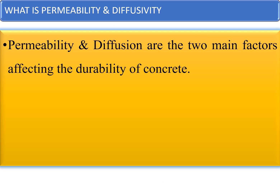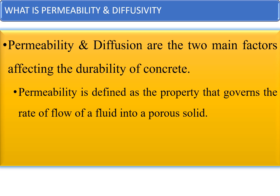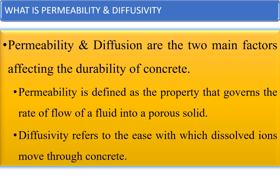Coming to the definition of permeability and diffusivity or diffusion — there are two main factors affecting the durability of concrete: permeability and diffusion. Permeability is defined as the property that governs the rate of flow of a fluid into a porous solid. Diffusivity refers to the ease with which dissolved ions can move through the concrete.